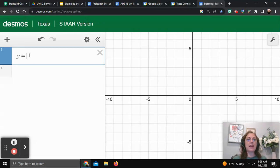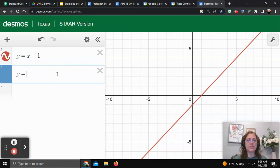Remember, the first one was y equals x minus 1, and the second one was y equals negative 2x plus 8. There we go.